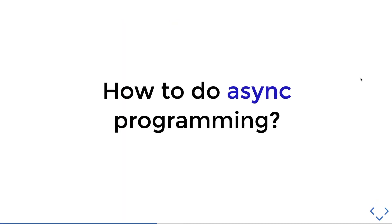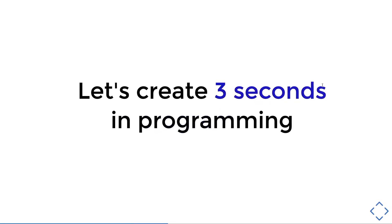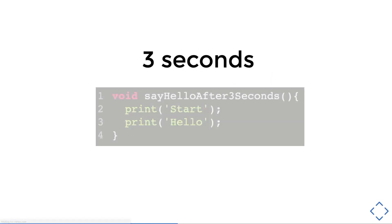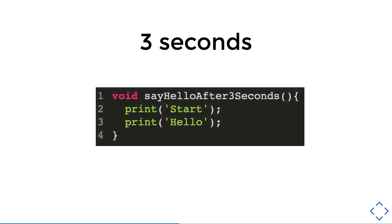So how do we do async programming? Let's give a simple example by creating a three-second delay. Let's say we have a function called say hello after three seconds. This function has two print statements: start and hello. We want three seconds of delay in between the start and hello statements, meaning after start prints, three seconds later, the word hello will be printed.